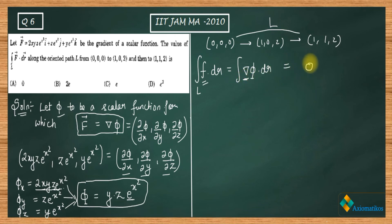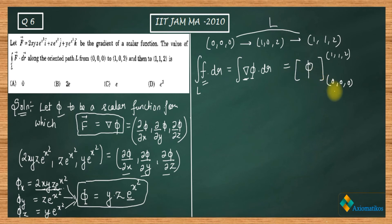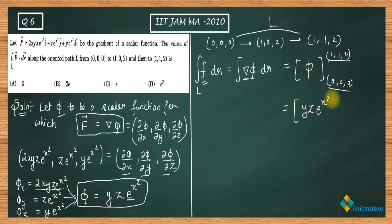The integral of f dot dr equals the integral of del phi dot dr, which simply gives phi evaluated at the endpoints. The initial point is (0,0,0) and the final point is (1,1,2). So the answer is phi(1,1,2) minus phi(0,0,0). Our phi is yz·e^(x²).